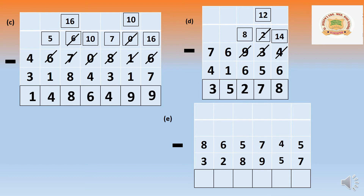Next question e: 8,65,745 minus 3,28,957. We will work digit-wise only to avoid confusion. We are borrowing from the next numbers.